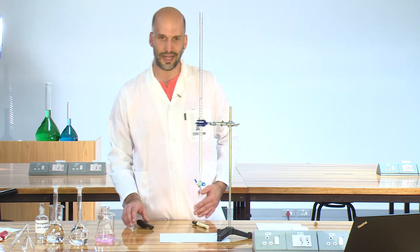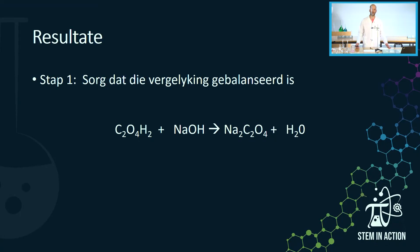Once all our values are obtained, the next step is to take our chemical equation and check that it is balanced. On the left side there is one sodium ion, and on the right side there are two - so we adjust the sodium hydroxide to 2 moles. Then checking carbon: two on the left, two on the right - correct. Checking oxygen: counting gives us six on the left and five on the right - so we add two water molecules to balance it. Our equation is now balanced.